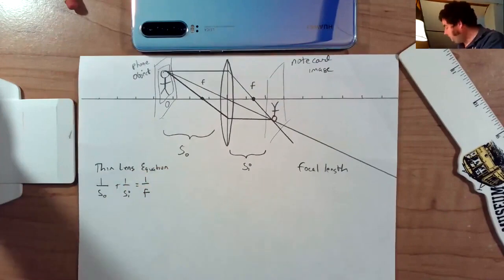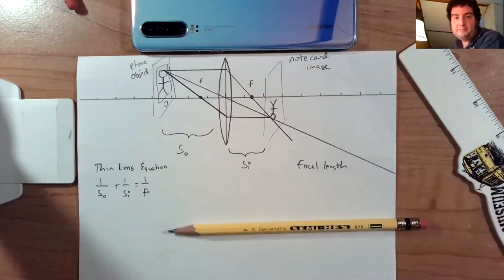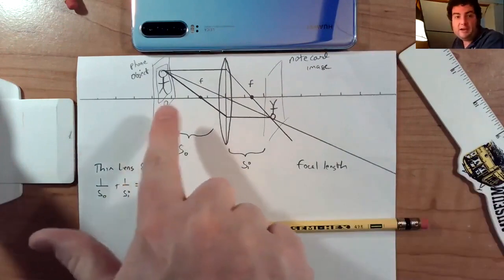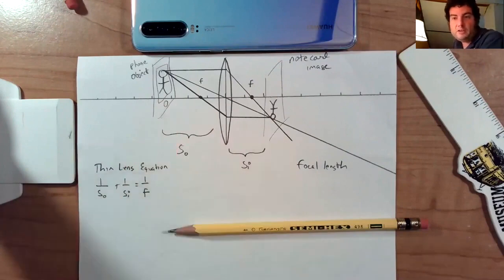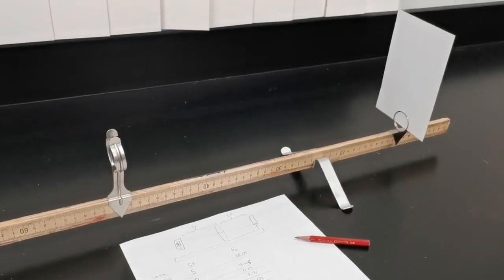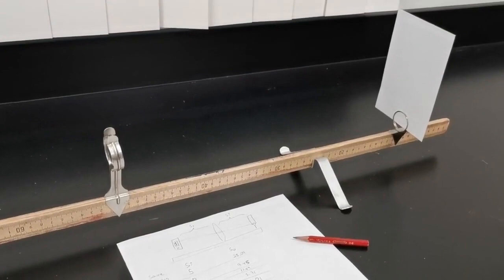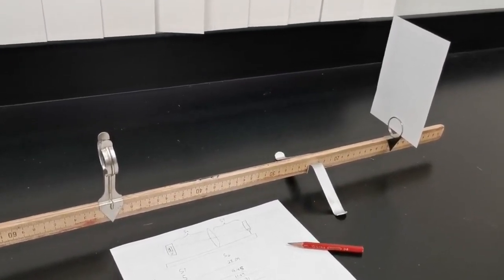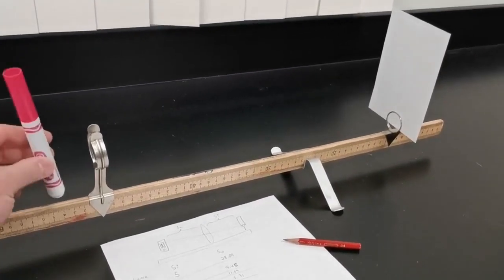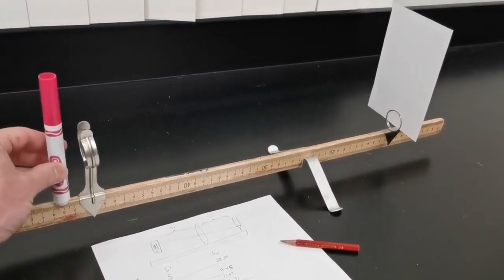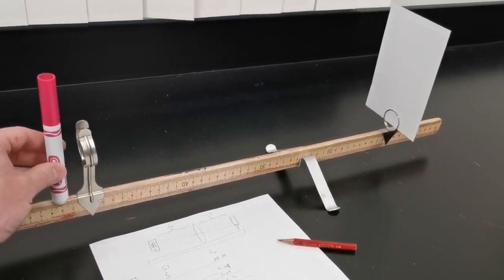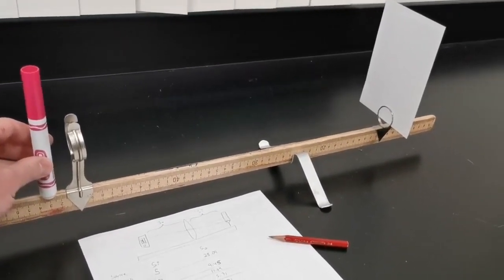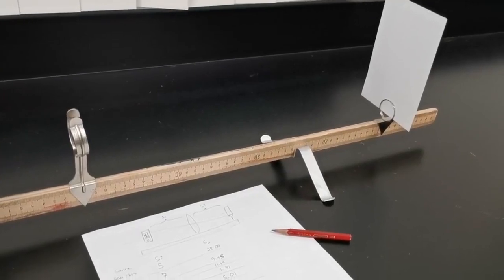So what we're going to do is look at data for lots of different object distances. Look at the image that they form. Look at those data. And we're going to try to see if this equation holds true. It's hard to make a video of this because I'm filming this on my phone. And my object is going to be a selfie on the phone. But basically, what we're going to do is place an object three centimeters away. And we're going to move that note card around to find the image. I'm then going to repeat every two centimeters.